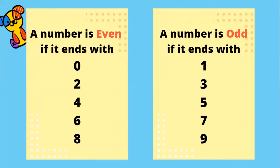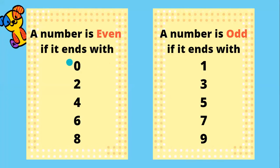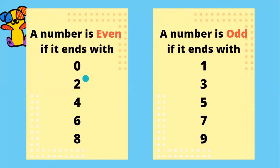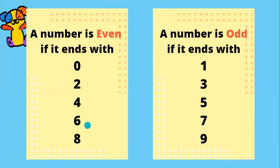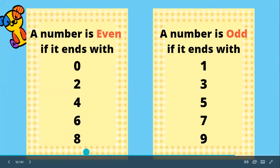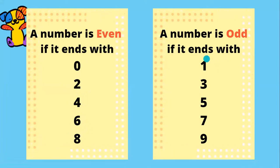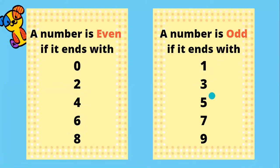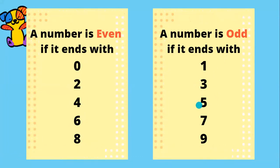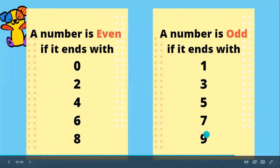A number is even if it ends with zero, two, four, six, or eight. And a number is odd if it ends with one, three, five, seven, or nine.